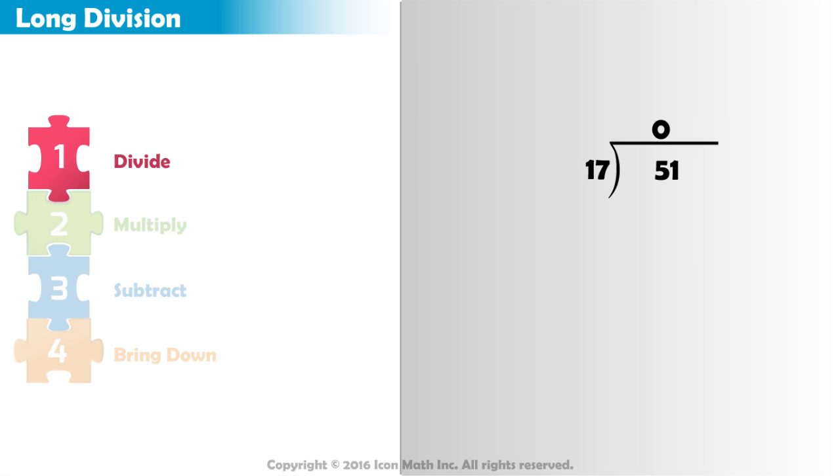We write a zero in our quotient above the 5 from our dividend. The second step is to multiply the digit we placed in our quotient by the divisor. Zero times 17 equals zero.